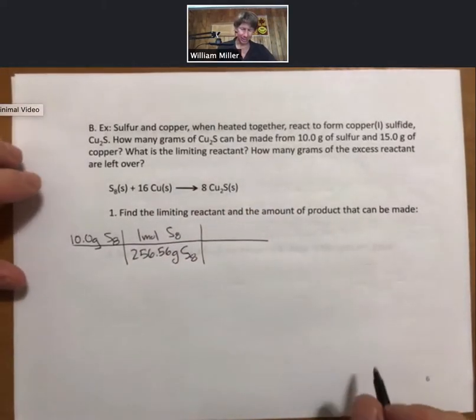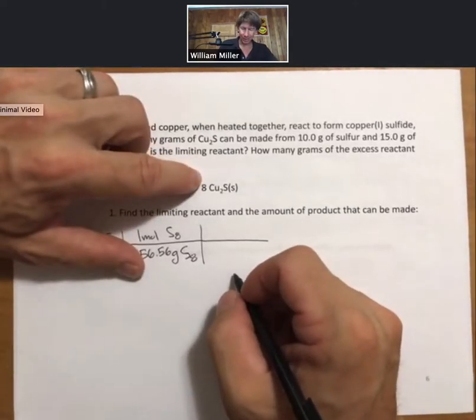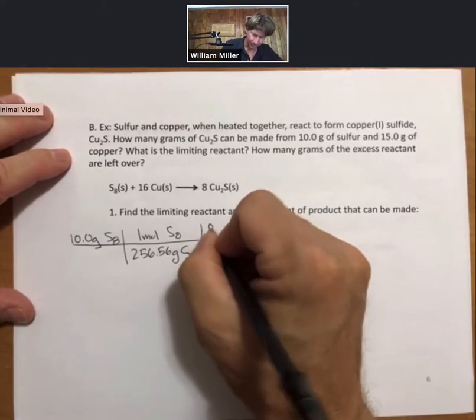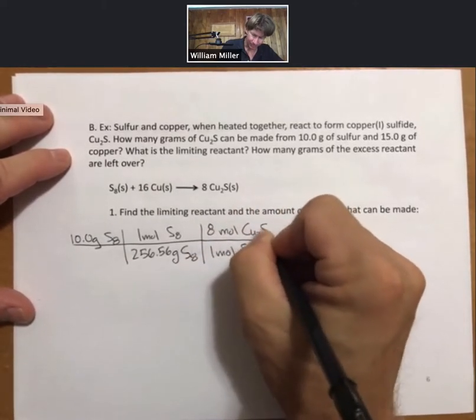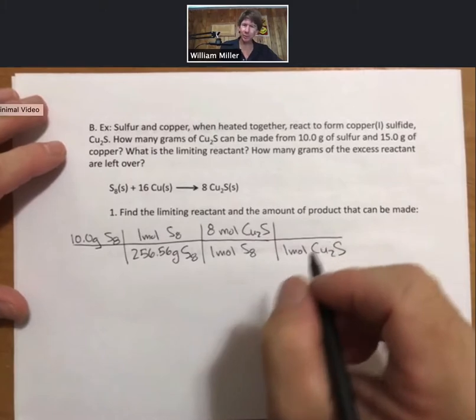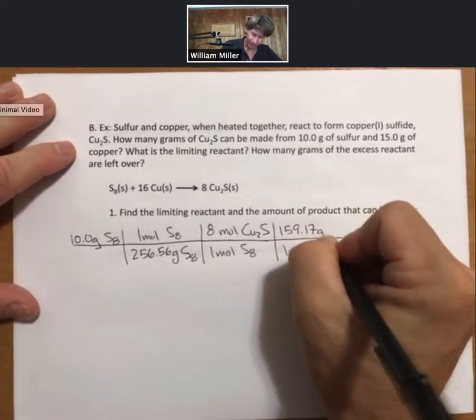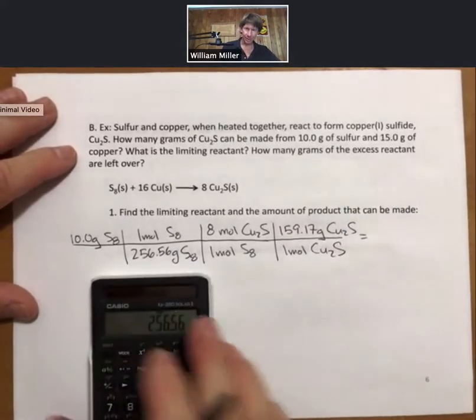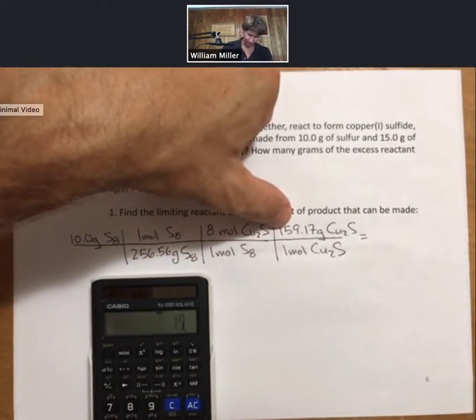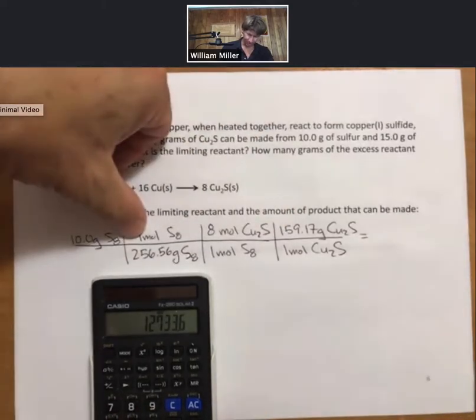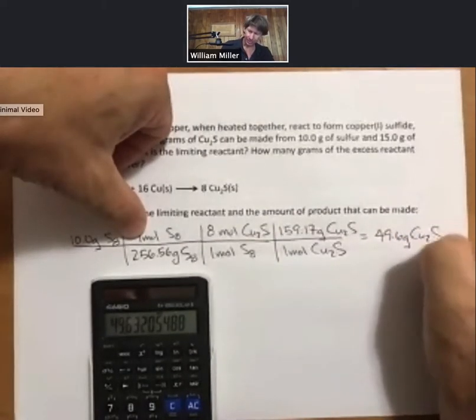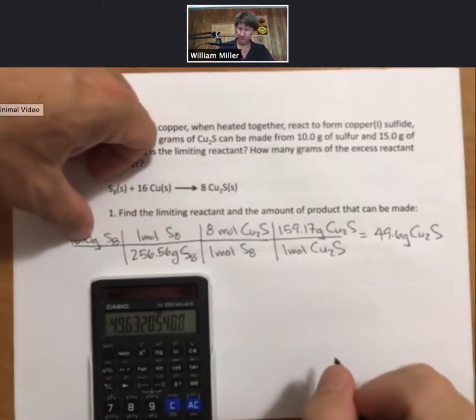I have one mole of S8. And now for every one mole of S8, there are eight moles of copper sulfide, and then for the molar mass of copper sulfide, I get 159.17. Multiplying this all out, 10 times 8 times 159.17 divided by 256.56, 49.6 grams of copper sulfide are possible if sulfur is the limiting reactant.